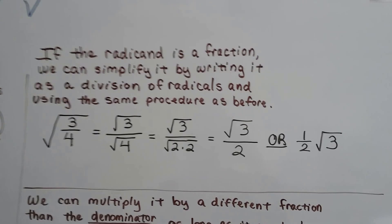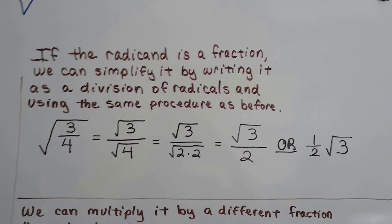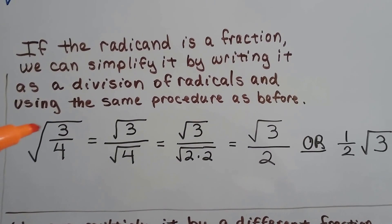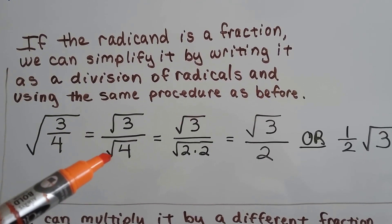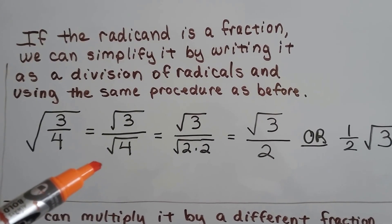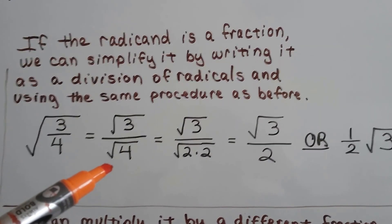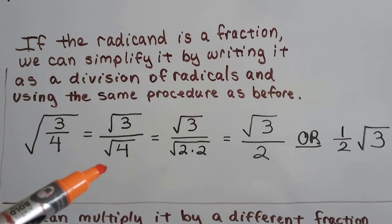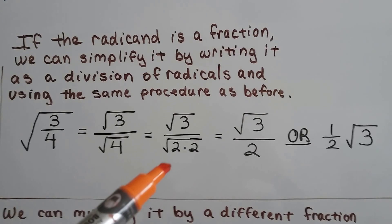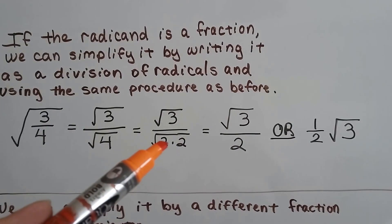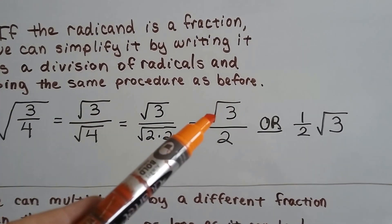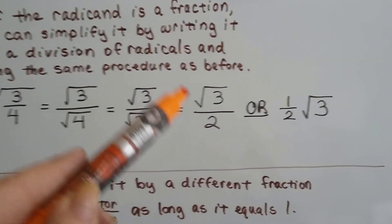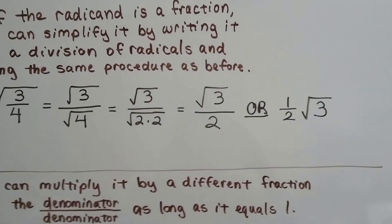If the radicand is a fraction, we can simplify it by writing it as a division of radicals using the same procedures we did before. So if we've got the square root of 3/4, it's the same thing as the square root of 3 divided by the square root of 4 — that's the division property for radicals from the last video. The square root of 4 is 2, and we put the square root of 3 over 2. We can also write it, because of the invisible 1, as 1/2 times the square root of 3.